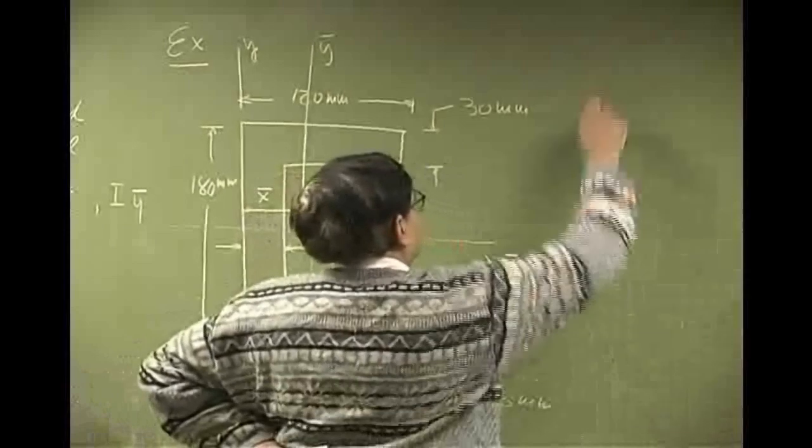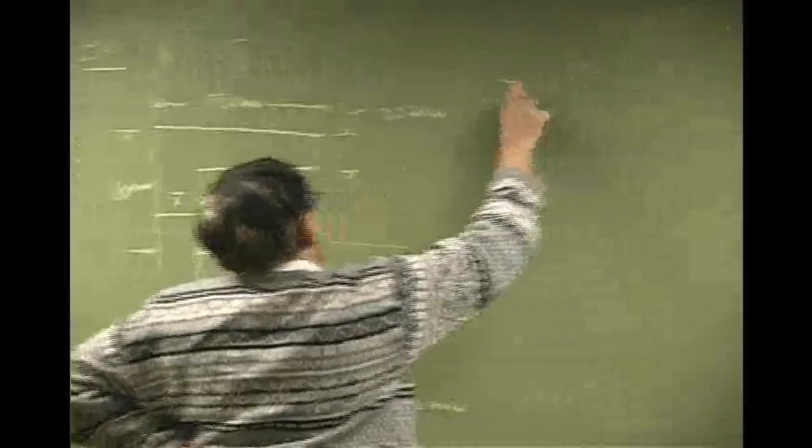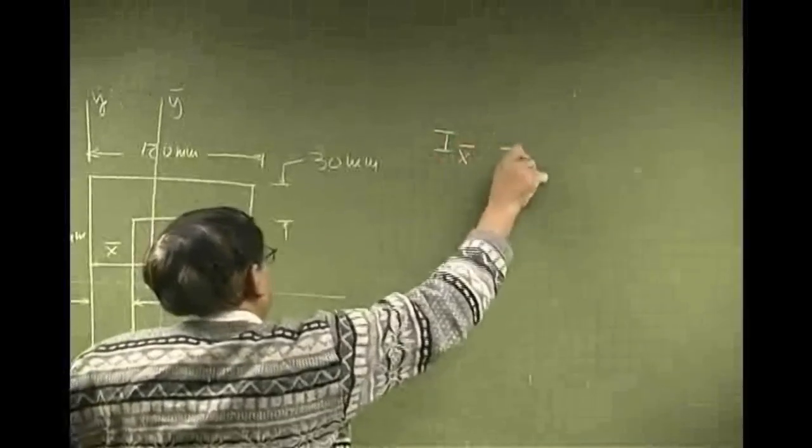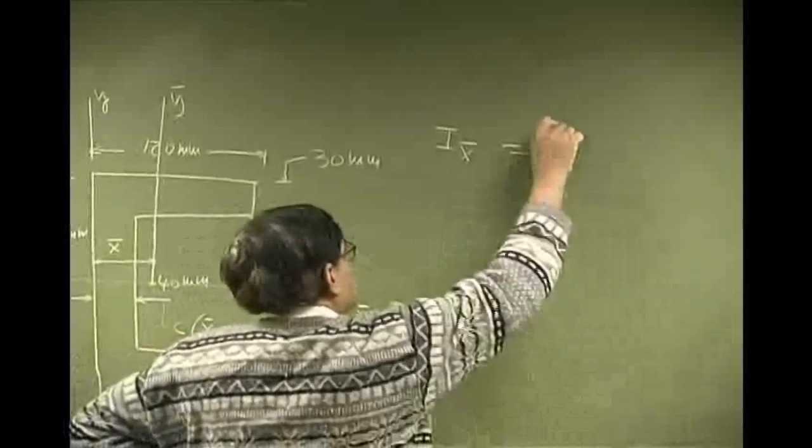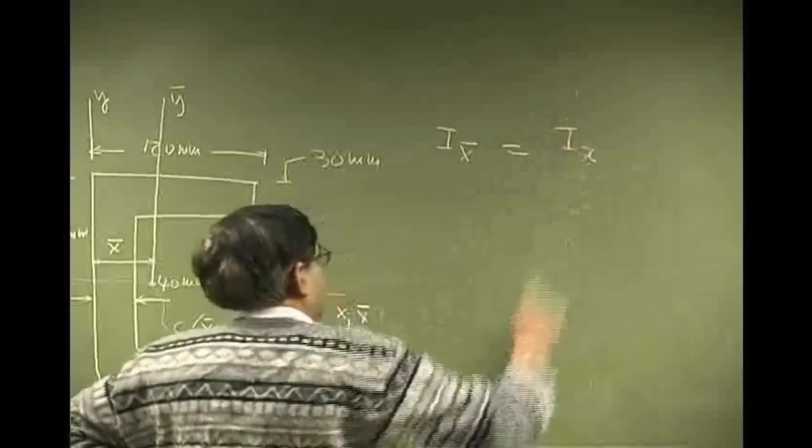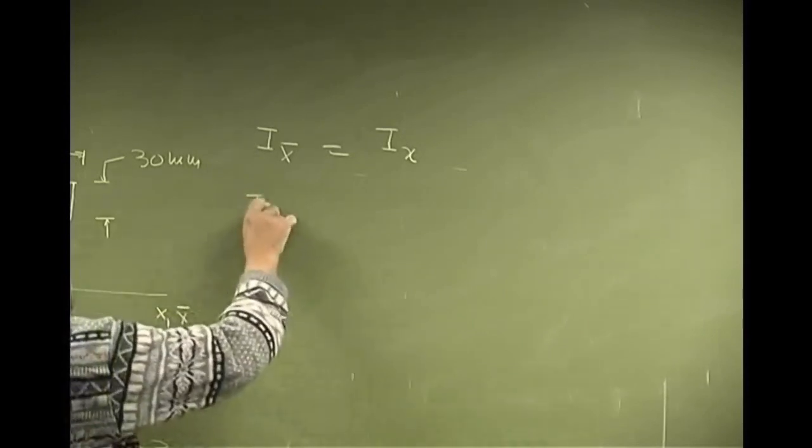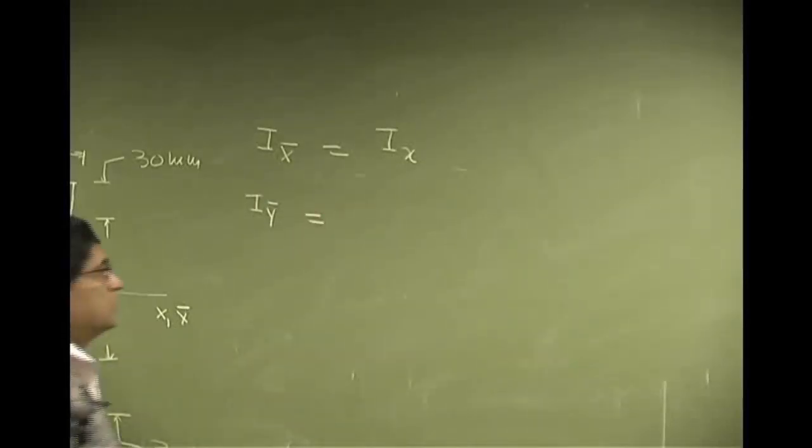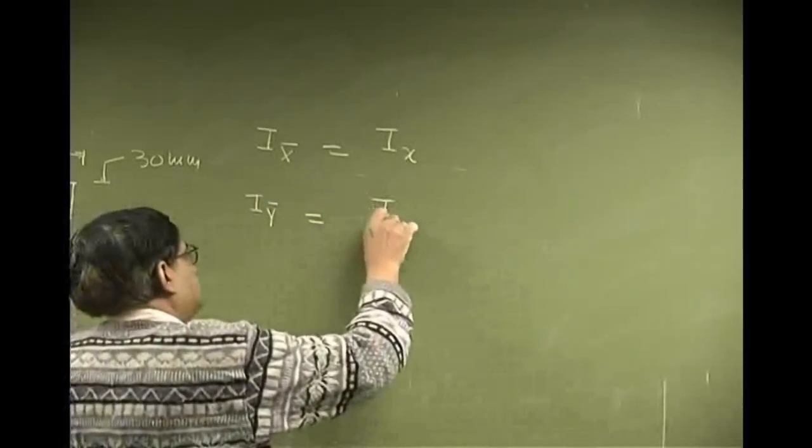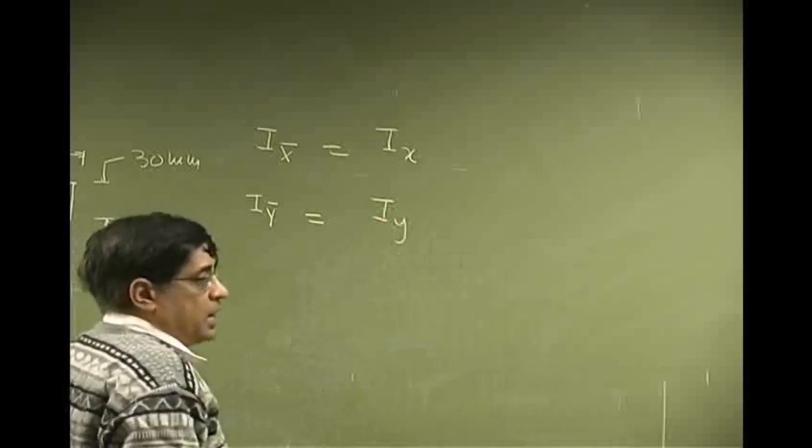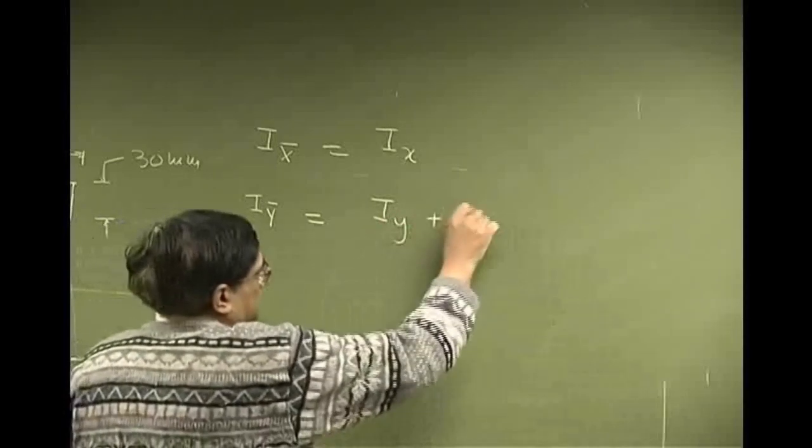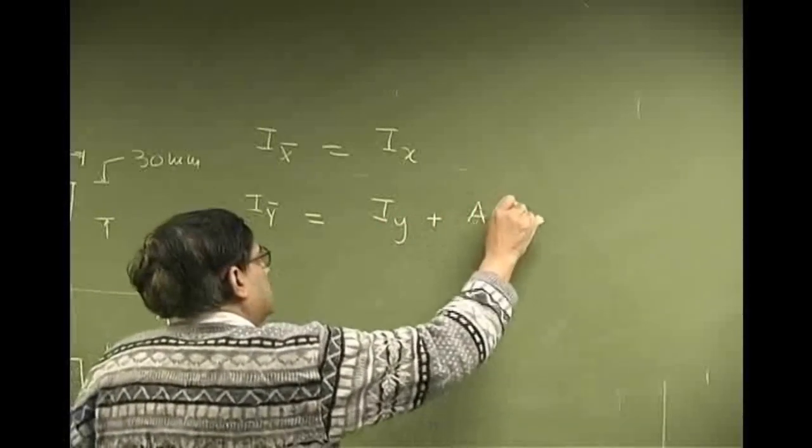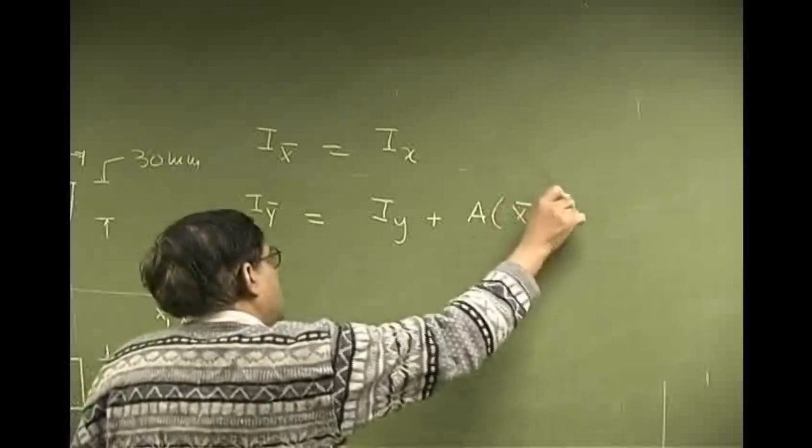Now, before we proceed, as we said that i-x-bar, the one we are really looking for, is going to be the same as i-x, where the two axes coincide. Now, i-y-bar should be equal to inertia by the y-axis plus area cross-section times x-bar squared.